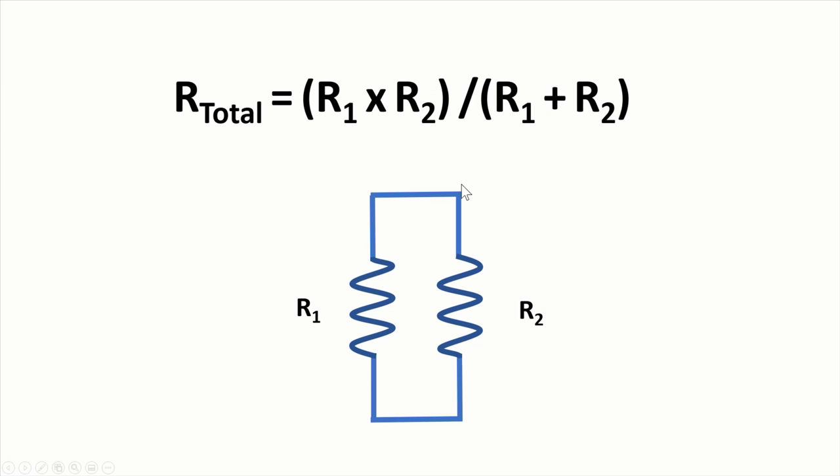If they're in parallel, then you have a little bit more complicated formula. So it's R1 times R2 divided by R1 plus R2.